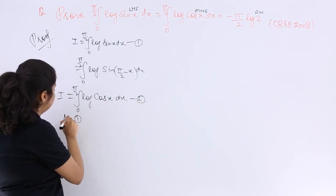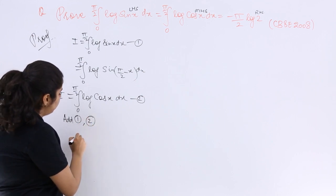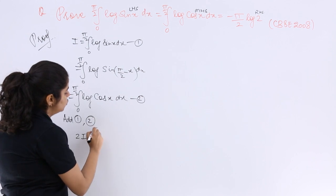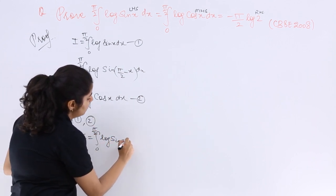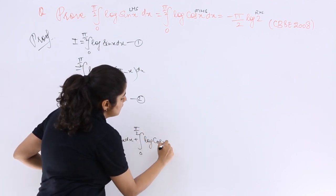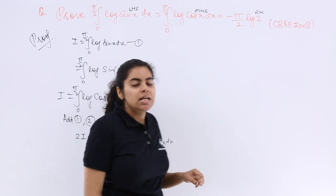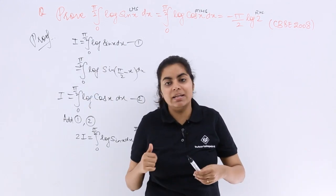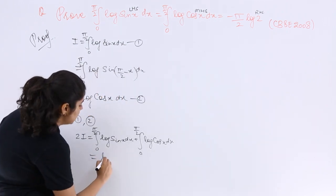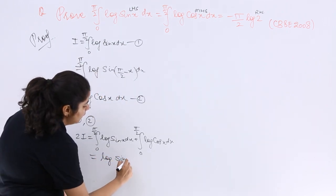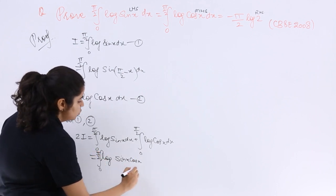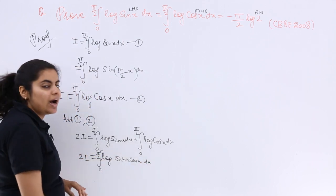Now if I have to add these, if I say I have to add 1 and 2, what happens? I plus I becomes 2I and this is 0 to π/2 log sin x dx plus 0 to π/2 log cos x dx. Now log m plus log n is equal to log mn, that is what I will be using for this. 2I is here.